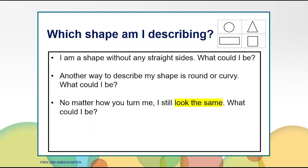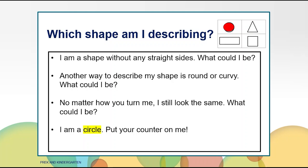Here is the next clue. No matter how you turn me, I still look the same. What could I be? Now that you have all the clues, decide if you want to keep the counter or move it. The answer is a circle. Put your counter on the circle. The circle is a shape without any straight sides. It is round and curvy and no matter how you turn it, it looks the same.